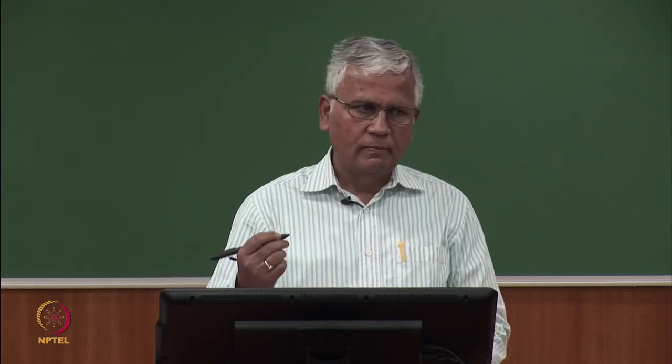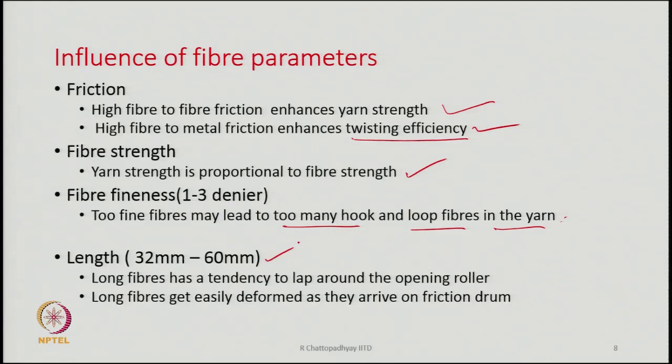Too coarse fibres are also not possible because the number of fibres in the cross section will be low and cohesion between fibres will be low. For wrapping, we need fibres to bend — if sheath fibres are too coarse they will not make tight wraps. Regarding fibre length, long fibres have a tendency to lap around the opening roller, and they also get easily deformed. Too-short fibres are also not good. The suitable range is 32 to 60 mm.